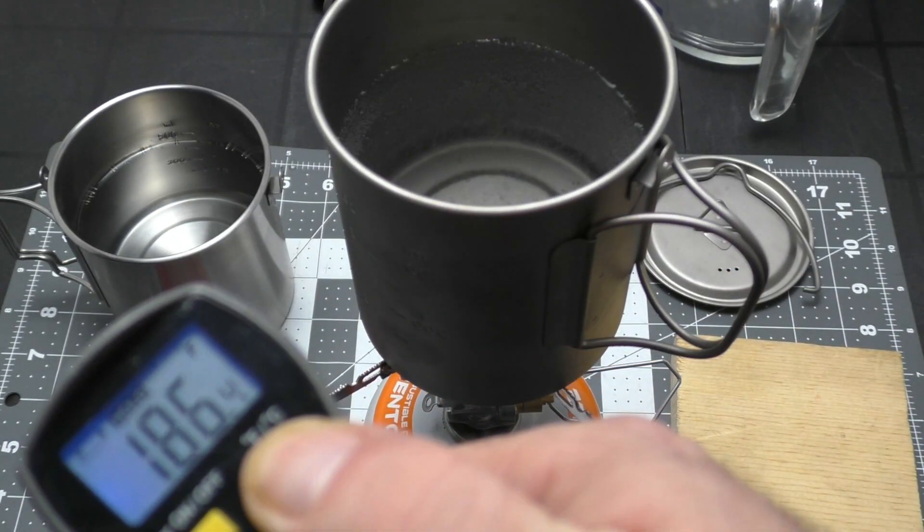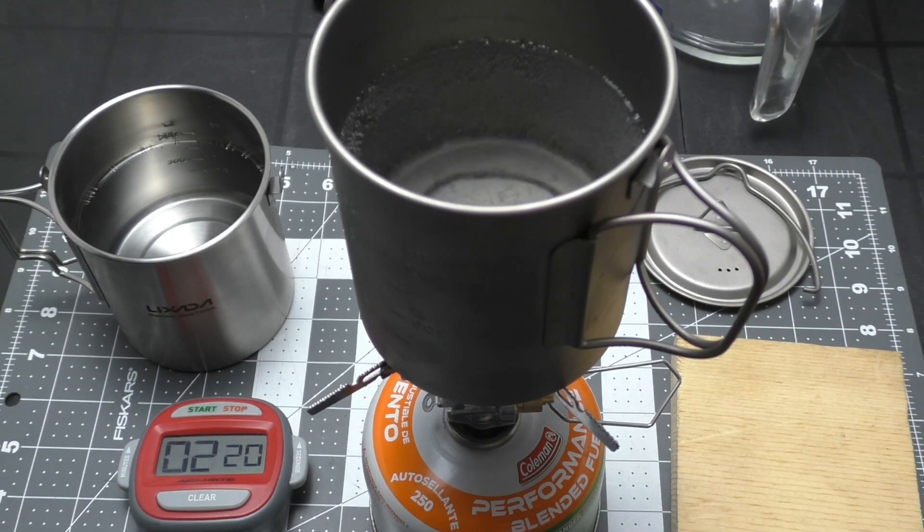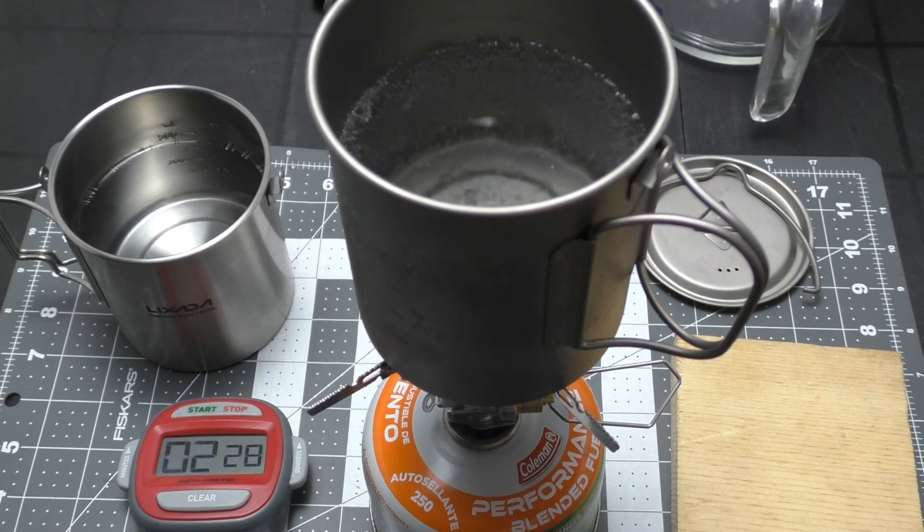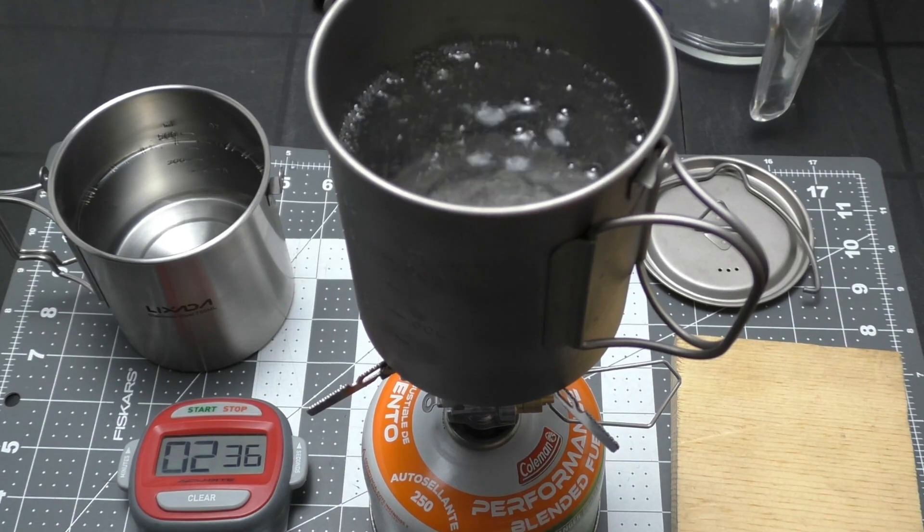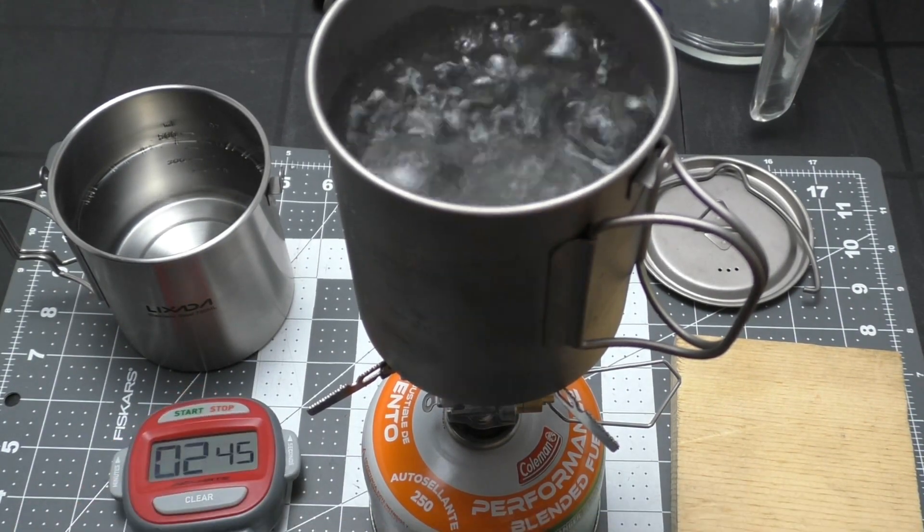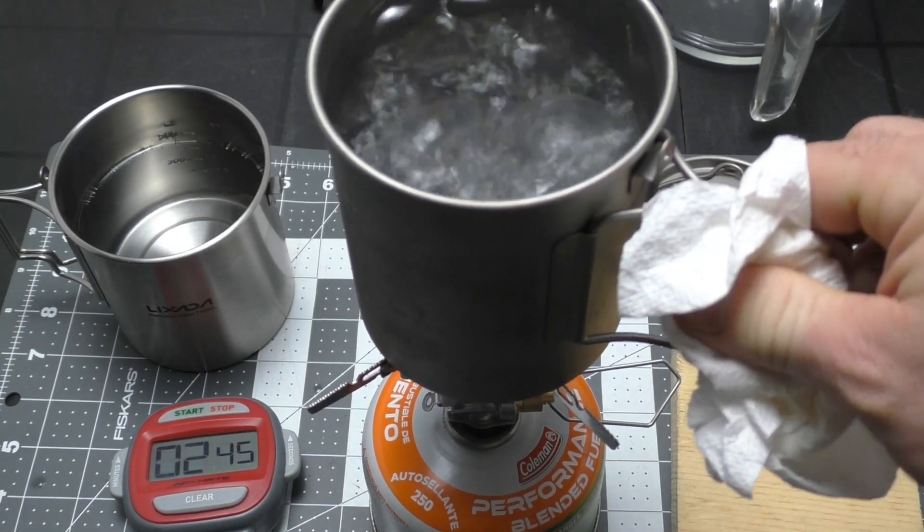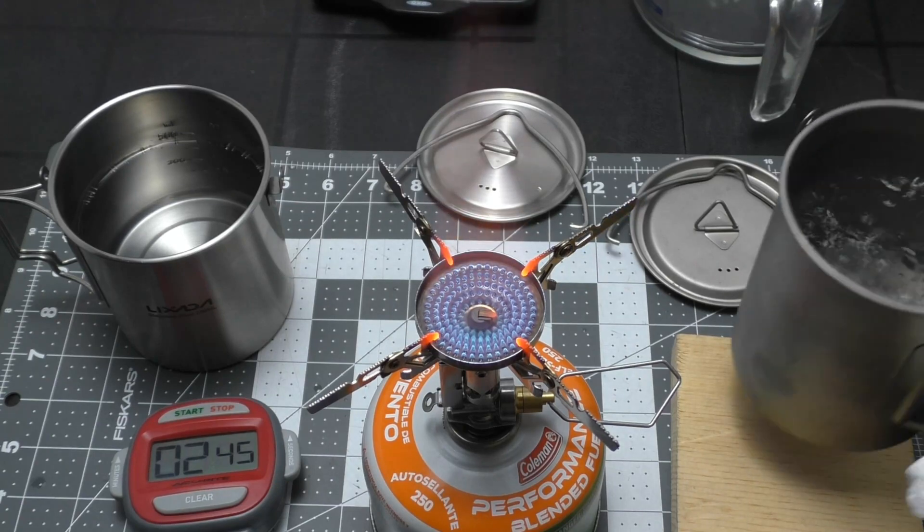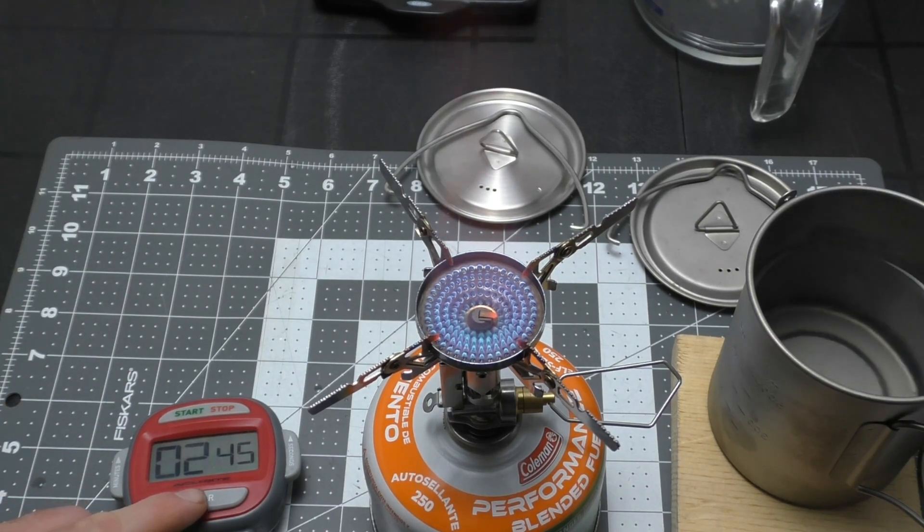185, 186, 85 point whatever degrees Celsius. Approaching two and a half minutes. 209, I'm going to call that as a boil at 2:45. Actually I don't want to close that but I do want to get that off there. Okay, now we're going to throw, so 2:45 for the titanium, clear that and start.